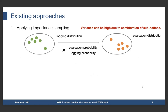There are two prevalent approaches in existing methods. The first is applying importance sampling. In our policy evaluation, we use log data collected by some logging policy in the system. But our policy of interest — the Evaluation Policy — may have a different data distribution from the logging policy. So to deal with this distribution shift, we apply an importance weight, which is the Evaluation Policy's probability divided by the logging policy's probability, to enable unbiased estimation. However, this approach suffers from high variance due to the combination of sub-actions, since the very large action space makes the importance weight typically very large.